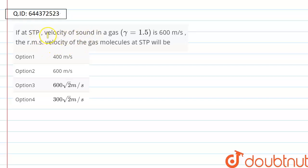Hello friends, the problem is: if at STP velocity of the sound in gas where gamma is 1.5 is 600 meter per second, then RMS velocity of the gas molecule at STP will be?